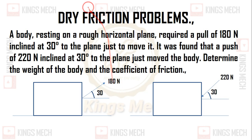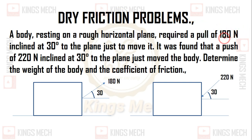In this problem, a body resting on a rough horizontal plane required a pull of 180 Newton inclined at 30 degrees to the plane just to move it. It was found that a push of 220 Newton inclined at 30 degrees to the plane just moved the body. Determine the weight of the body and the coefficient of friction.